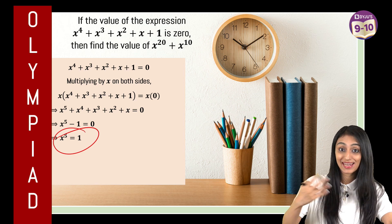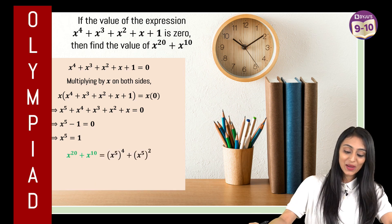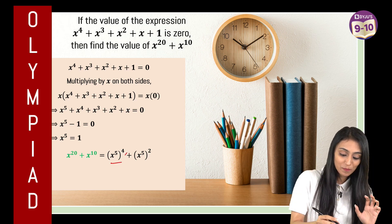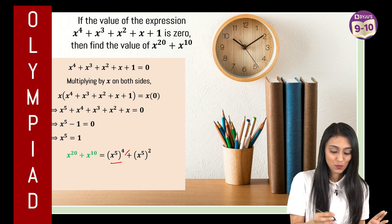Now I'm sure that you would be able to guess what the next step is going to be. So x to the power 20 could be written as x to the power 5 whole power 4 because when powers multiply, we can see that...